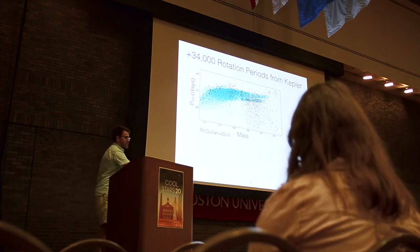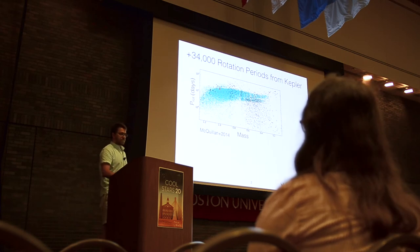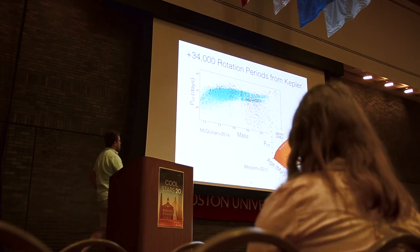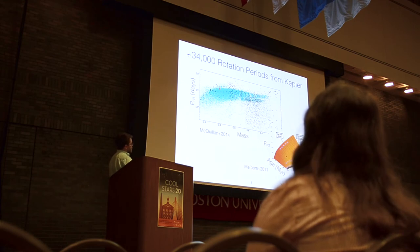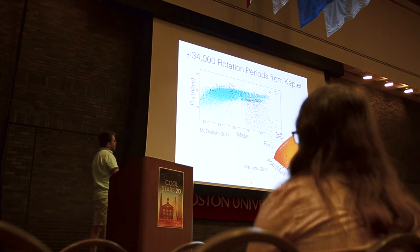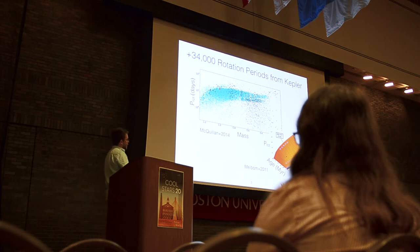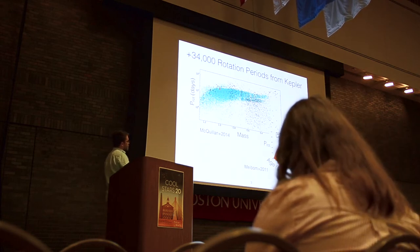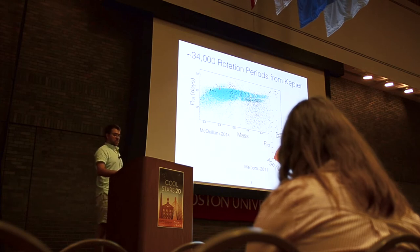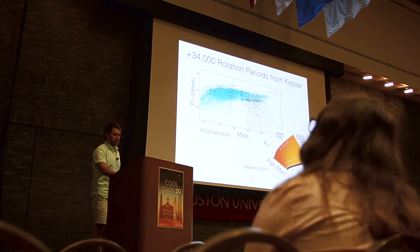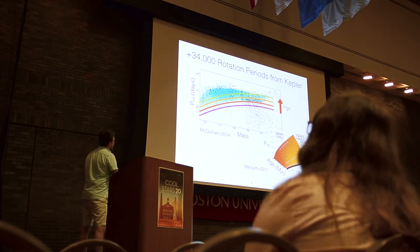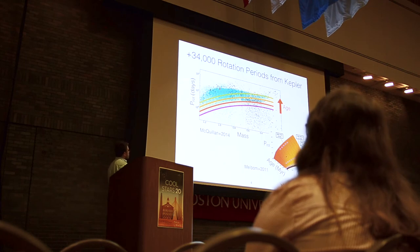The diagram we'll see throughout the week is this sort of manifold that we expect — that stars, as they age, should slow down. They should lose angular momentum and sort of march up this manifold. We have handfuls of clusters before and during Kepler that we could use to calibrate this surface. This is the so-called gyrochronology, which we've heard about and we'll hear about again with Gaia later today. That implies that a star should sort of move vertically in this space.